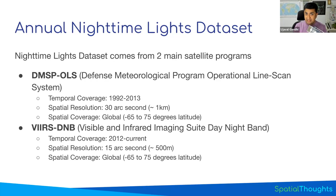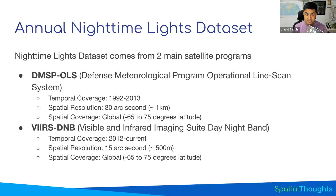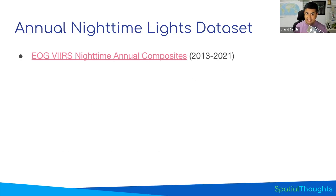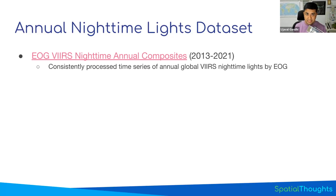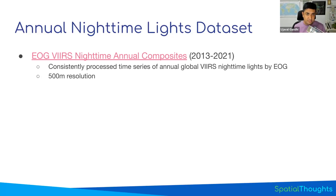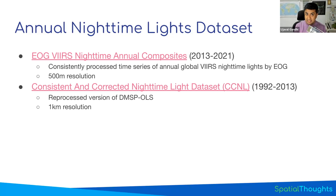If you're interested in working with VIIRS data, the highest quality data currently available is annual composites created from VIIRS nighttime lights images — one image per year from 2013 to 2021 at 500 meter resolution. If you're interested in the DMSP data, I suggest looking at the CCNL dataset, which is a reprocessed version of DMSP giving a consistent time series from 1992 to 2013 at one kilometer resolution.